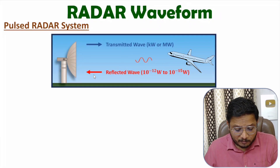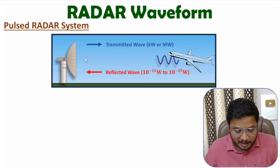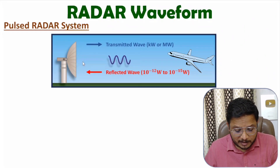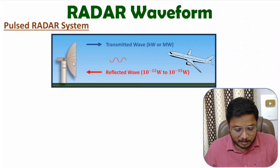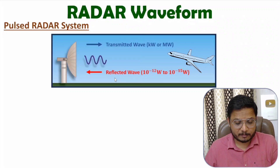That reflected wave is in terms of 10 to the power minus 12 watts to 10 to the power minus 15 watts. So here, for a short duration of time, we are transmitting the EM wave. After that, we are waiting for the echo signal, and based on comparison of the transmitted wave and received wave, this radar system will be identifying the range of the object.